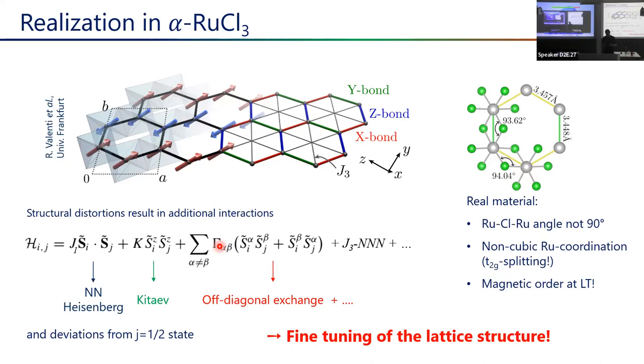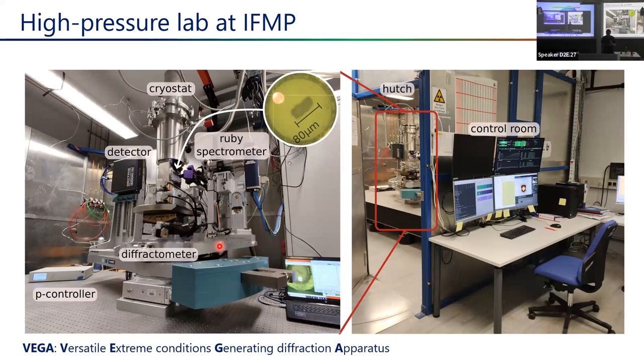Our naive idea was: what if we can experimentally tune the structure into a high-symmetry phase by applying hydrostatic pressure, pushing from all sides so the system goes by itself into a nice cubic high-symmetry structure? We set up a high-pressure lab in Dresden with a diffractometer, a prior-state light source with essentially no vibrations, a super-sensitive detector, and so on.